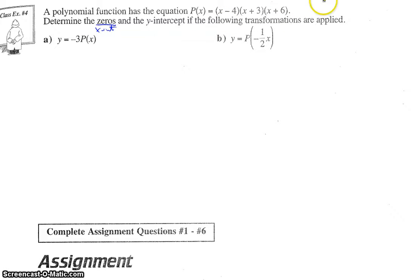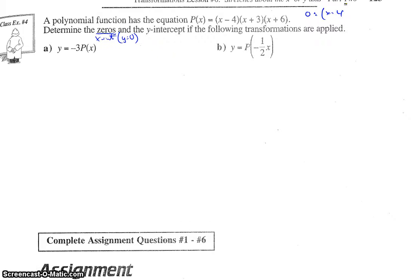If you recall from 20-1 and quadratic functions, we can find the x-intercepts, or the zeros, which is where y is 0, by taking that equation and going 0 = (x - 4)(x + 3)(x + 6). And then, since it's factored already, we can set each factor to 0.